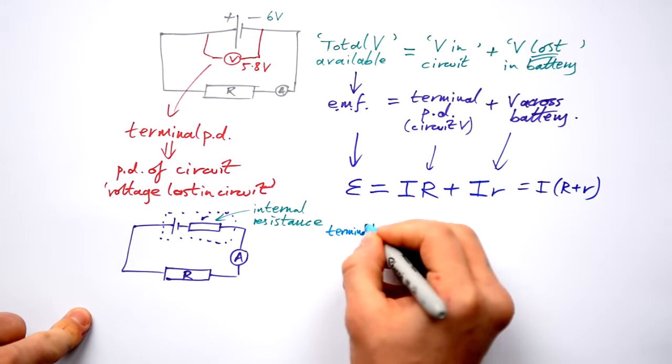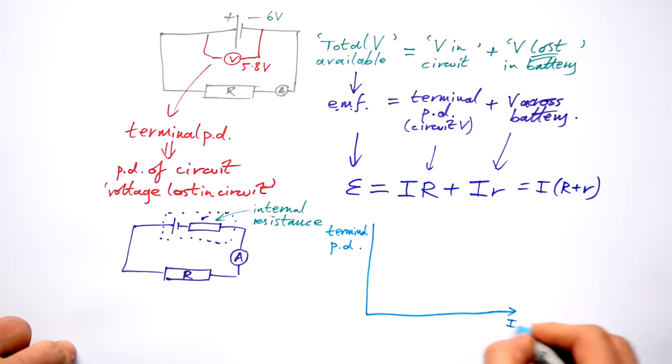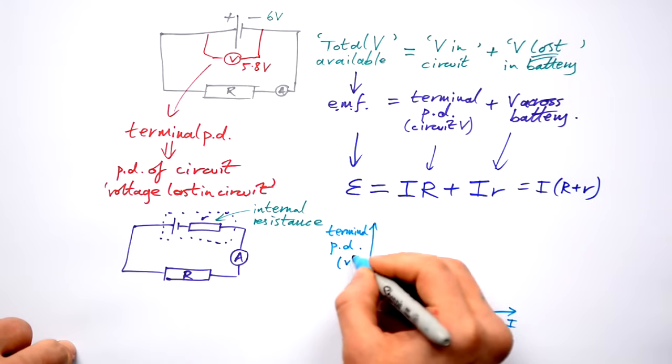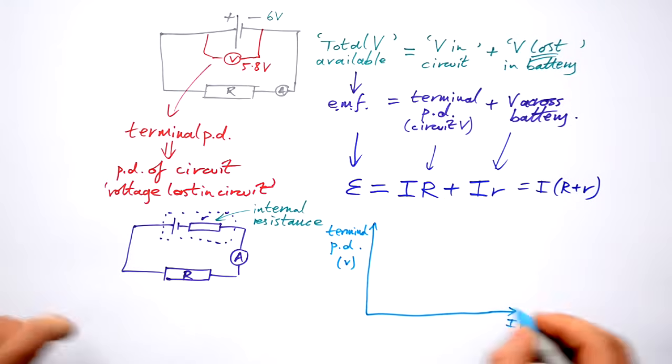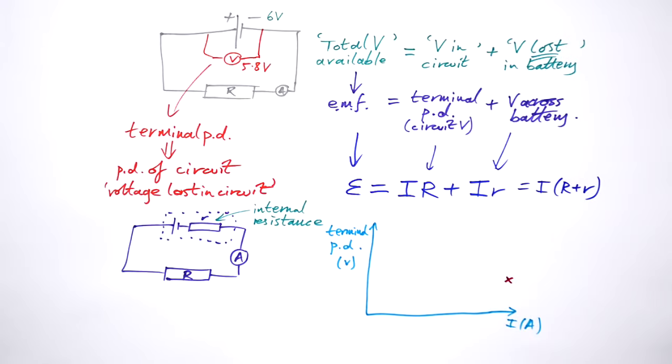We measure our terminal PD at different currents. And what we find is this, that if we start with a big current, then that means that we have not that much voltage available for the rest of the circuit. If we reduce the current, that is increase our load resistance,